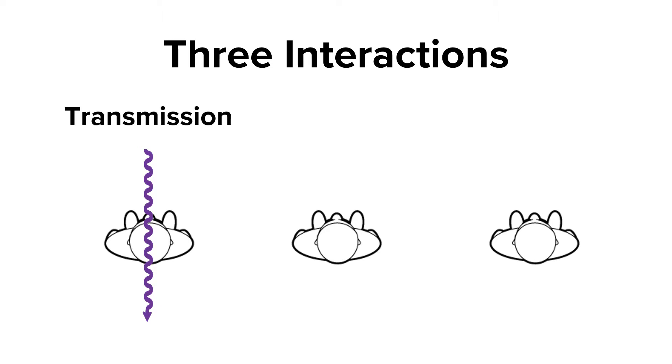The second way X-rays can interact with the patient is by being completely absorbed by the patient. The last way X-rays can interact is by interacting with the patient and releasing an X-ray in a direction different than its original path. This is called scatter radiation.